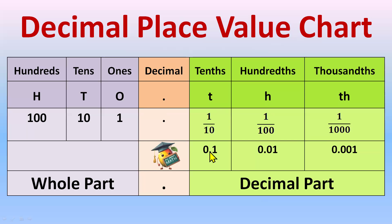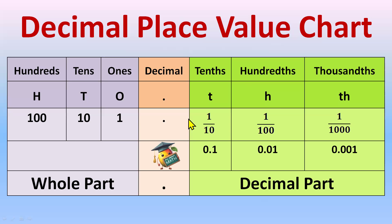This is the fractional representation of tenths, hundredths, and thousandths. In decimal representation: one-tenth is 0.1, one-hundredth is 0.01, one-thousandth is 0.001. I've explained this in the introduction video in more detail. Before the decimal point we call it the whole part, and after the decimal we call it the decimal part or fractional part — some books use 'fractional part' because of these fraction representations.